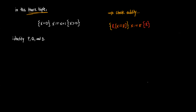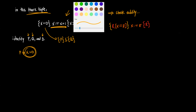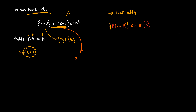Let's take a look at this Hoare triple. We can identify that our precondition is X equals 0 — this is the condition that needs to be satisfied in the state where we begin to execute our program. The program S is going to be X mapped to X plus 1, which is an assignment statement. And then finally we have our postcondition, X greater than 0 — this is the state it will terminate in if we execute this beginning in that state.